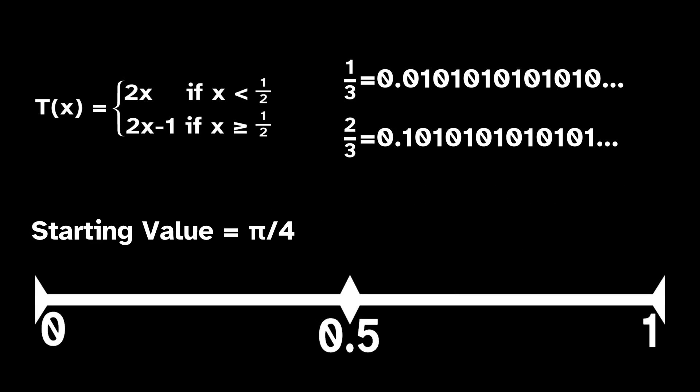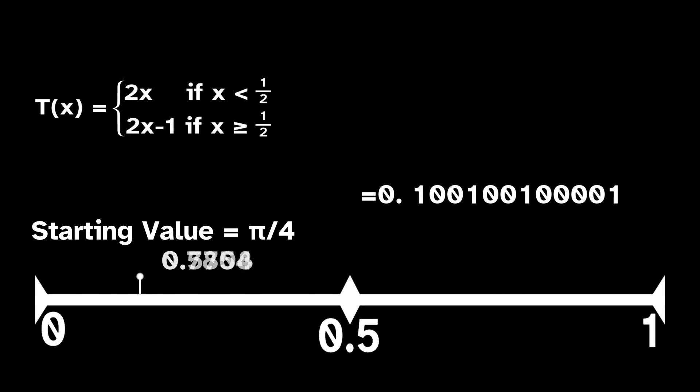And the trajectory of pi over 4 never returns to where it began, because pi over 4 is an irrational number, meaning its digits go on forever without ever repeating, regardless of what base the number is in.